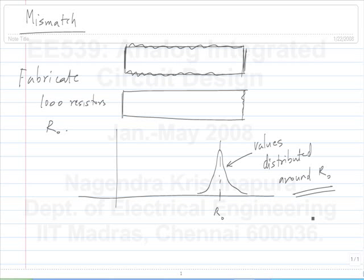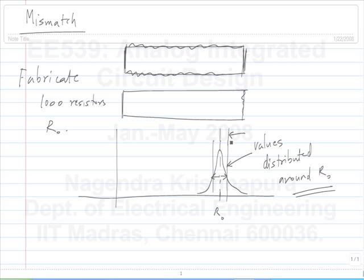Typically, just like many other natural processes, this will have a Gaussian distribution. Given that it is a Gaussian distribution, you can characterize it using the mean and the sigma — then you know everything about the distribution. So it will have a certain standard deviation sigma_R. If you plot the probability density function of a large number of resistance values that were supposedly identical, you will have the mean at the nominal value and a distribution around it with standard deviation sigma_R.